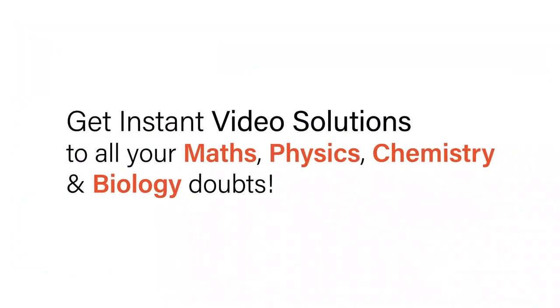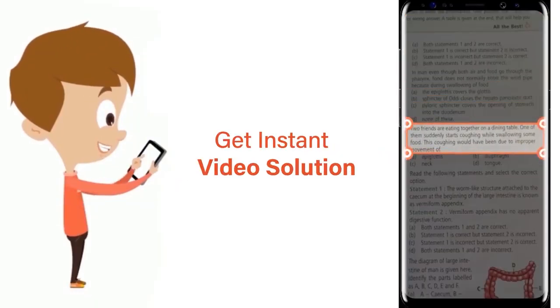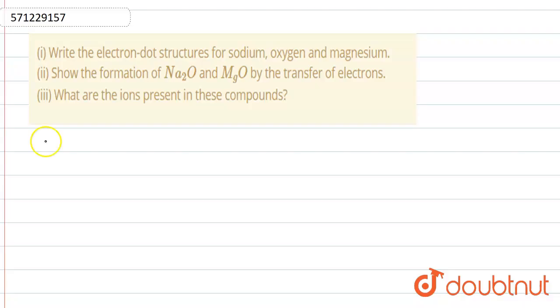With Doubtnet, get instant video solutions to all your maths, physics, chemistry, and biology doubts. Just click the image of the question, crop the question, and get instant video solutions. Download Doubtnet app today. Hello, the question is: write the electron dot structure...